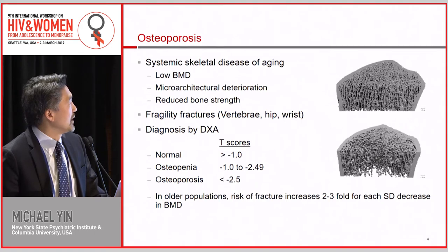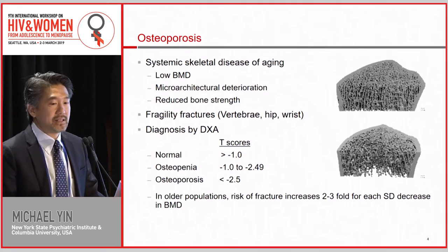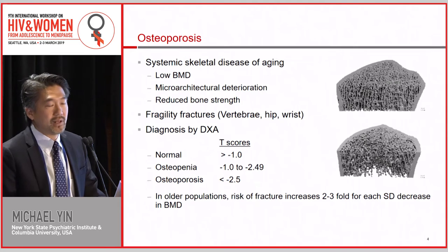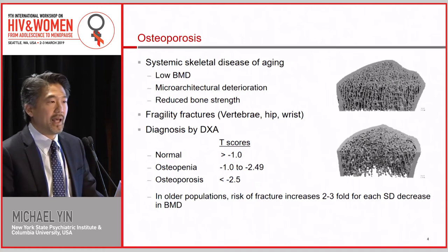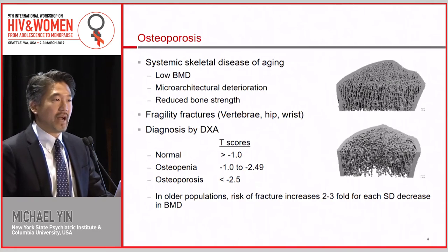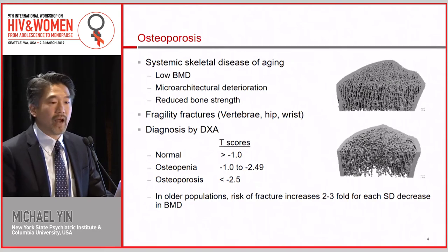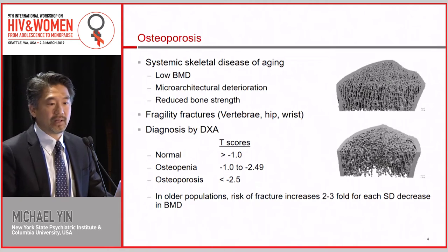So what is osteoporosis? Osteoporosis is a systemic skeletal disease of aging. It's characterized by low bone density and microarchitectural deterioration and reduced bone strength. That leads to the clinical presentation of fragility fractures — fractures from a non-traumatic event, such as falling from about standing height or less. It usually occurs at the vertebrae, the hip, and the wrist.